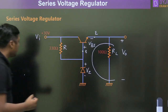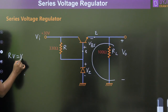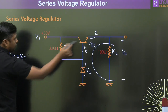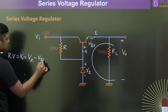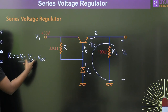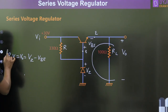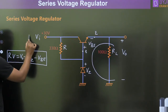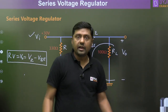From KVL, V0 equals VZ minus VBE. Since the Zener diode is in breakdown, VZ remains constant, and VBE is constant, so V0 is constant with respect to variation in VI or variation in RL. This is the key result: Zener diode in breakdown region and BJT in active region.